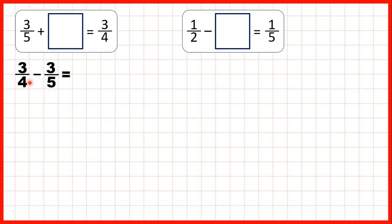Remember, 3 quarters is larger than 3 fifths because with fractions, the smaller the denominator, the larger the fraction. But to subtract these fractions, we need a common denominator. Now 5 isn't a multiple of 4, so we need to find two equivalent fractions.